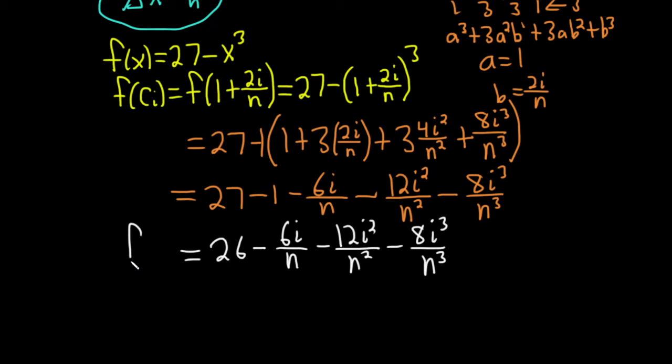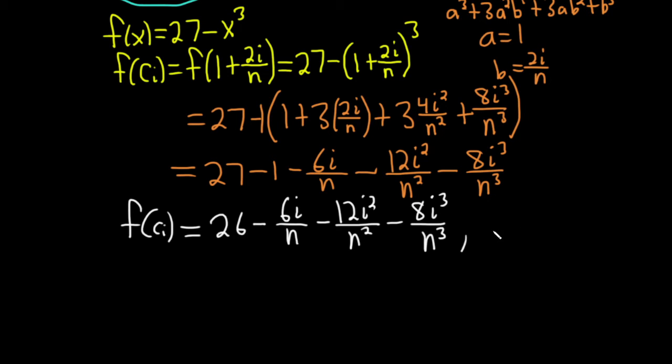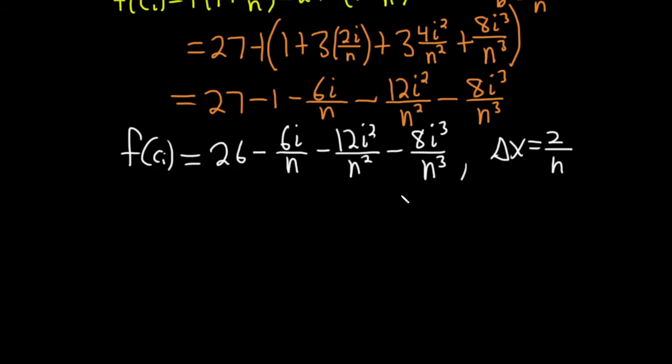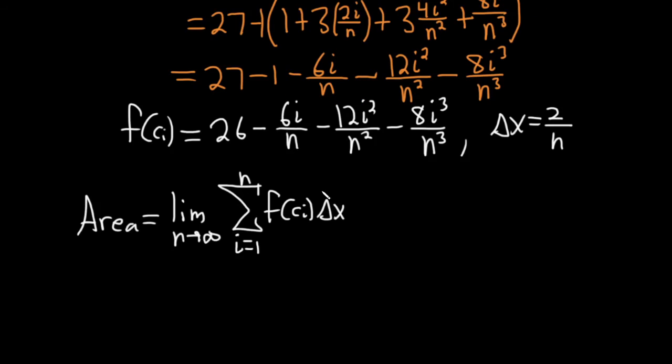All of this was f of c sub i. And delta x was 2 over n from before. So now let's write down the formula for the area. Our area is equal to the limit as n approaches infinity of the finite sum. I usually write the limit at the end, but I'll write it here. It's f of c sub i times delta x. We've worked out f of c sub i and delta x.